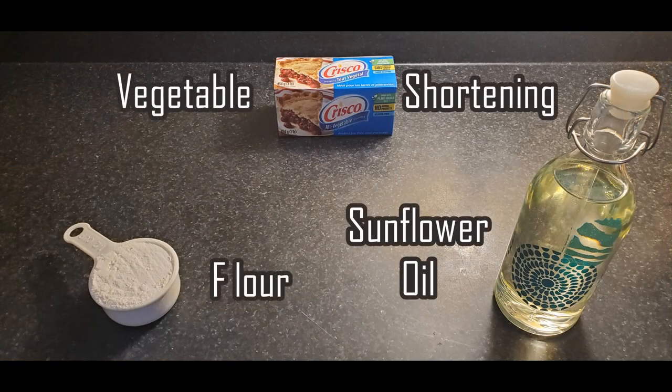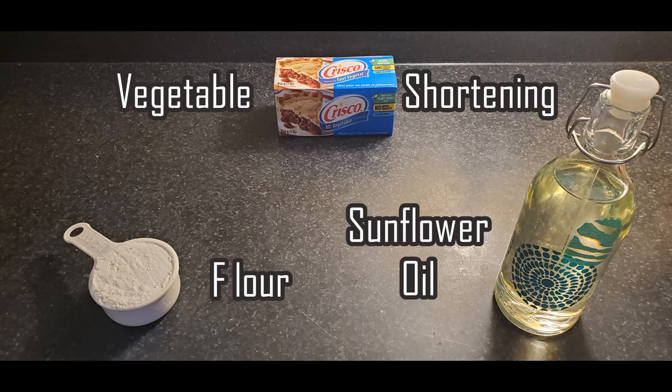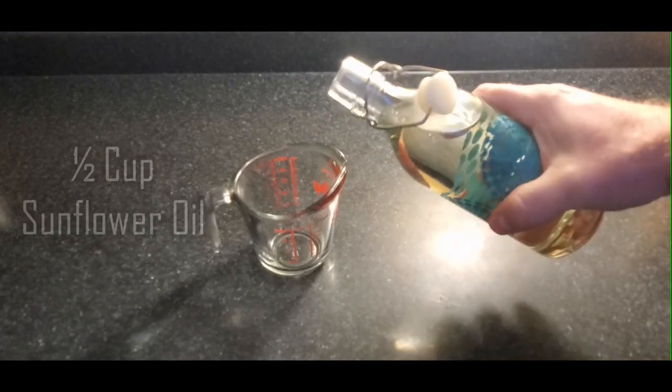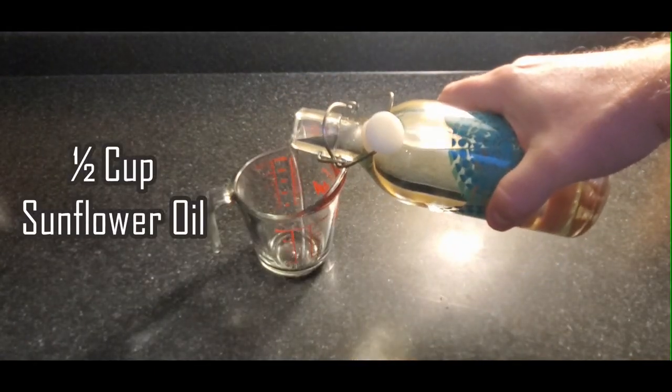I came across this interesting recipe for a cooking spray alternative years ago and I've been using it ever since. It has three main ingredients: vegetable shortening, flour, and a neutral flavored oil. I use sunflower oil now instead of olive oil, and I'll explain why I don't use olive oil anymore.